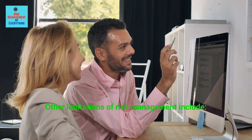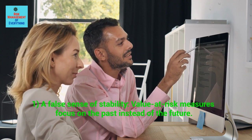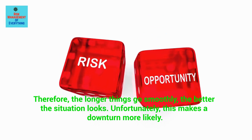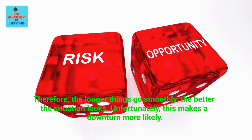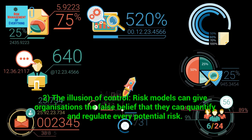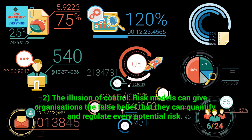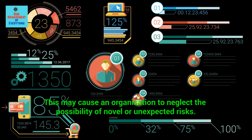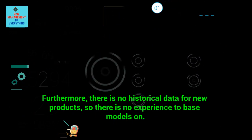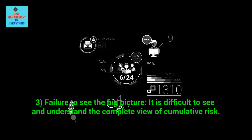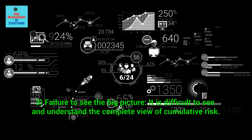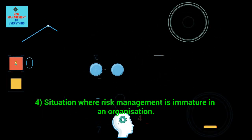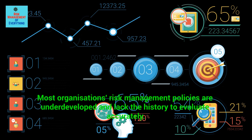Other limitations of risk management include: 1. A false sense of stability — value at risk measures focus on the past instead of the future; therefore, the longer things go smoothly, the better the situation looks, which makes a downturn more likely. 2. The illusion of control — risk models can give organizations the false belief that they can quantify and regulate every potential risk, causing them to neglect the possibility of novel or unexpected risks; there is also no historical data for new products. 3. Failure to see the big picture — it is difficult to see and understand the complete view of cumulative risk. 4. Immature risk management — most organizations' risk management policies are underdeveloped and lack the history to evaluate accurately.